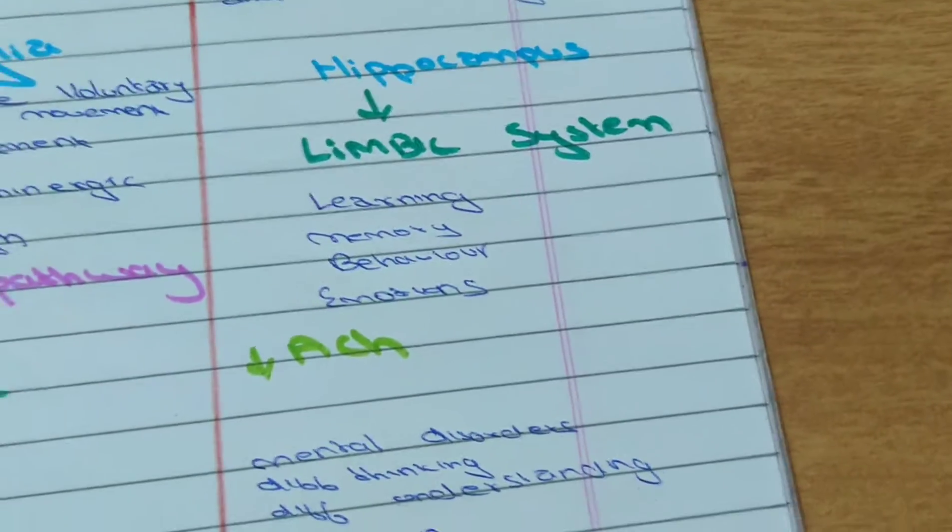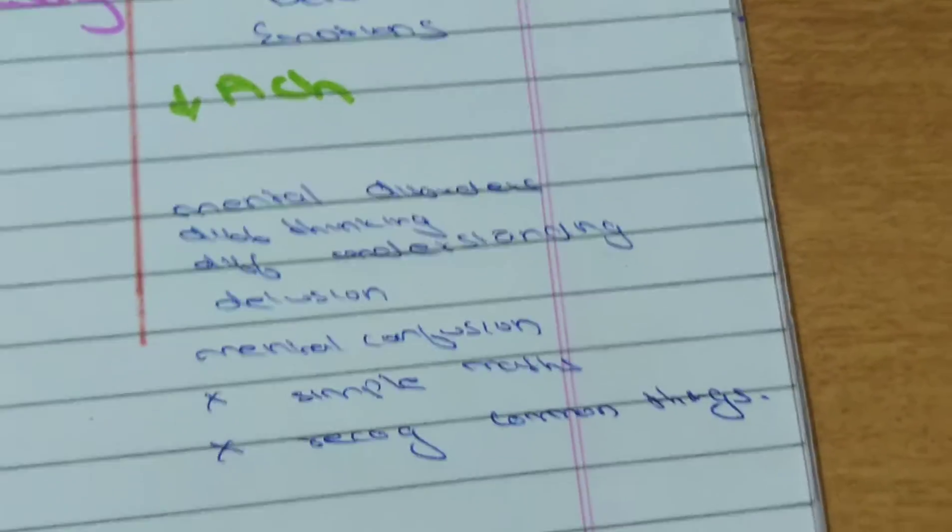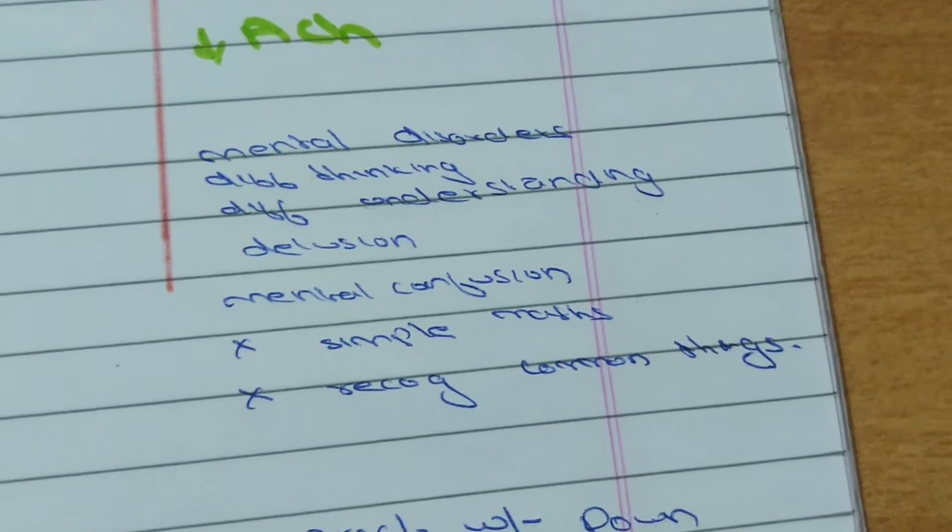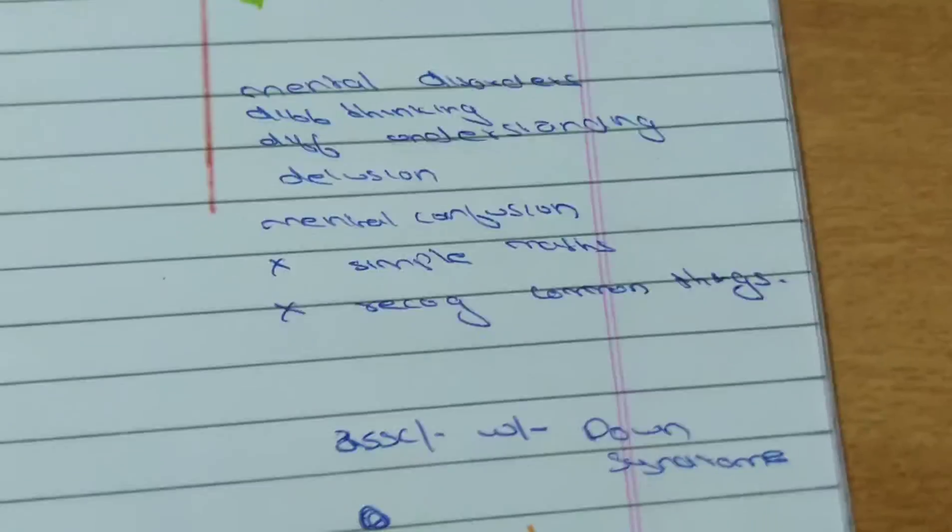Whereas in Alzheimer's disease hippocampus is affected which is part of limbic system. So there will be mental disorders, difficulty in thinking, difficulty in understanding, delusion, mental confusion. These patients won't be able to understand simple maps or recognize common things.